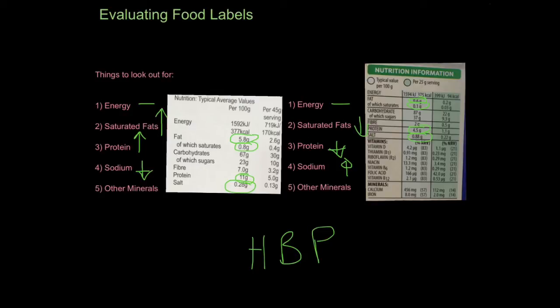If you're trying to watch your blood pressure, you'd definitely choose the lower-sodium cereal. Other minerals to look out for include calcium, which is important for bones, and iron. For example, if you are breastfeeding, you might want to take more calcium than usual because you'll need to produce breast milk. It's also common to develop anaemia, which is an iron deficiency — your blood can't carry as much oxygen, making you tired and lethargic. It's very common in females because of their menstrual cycle, so iron is also something to look out for.